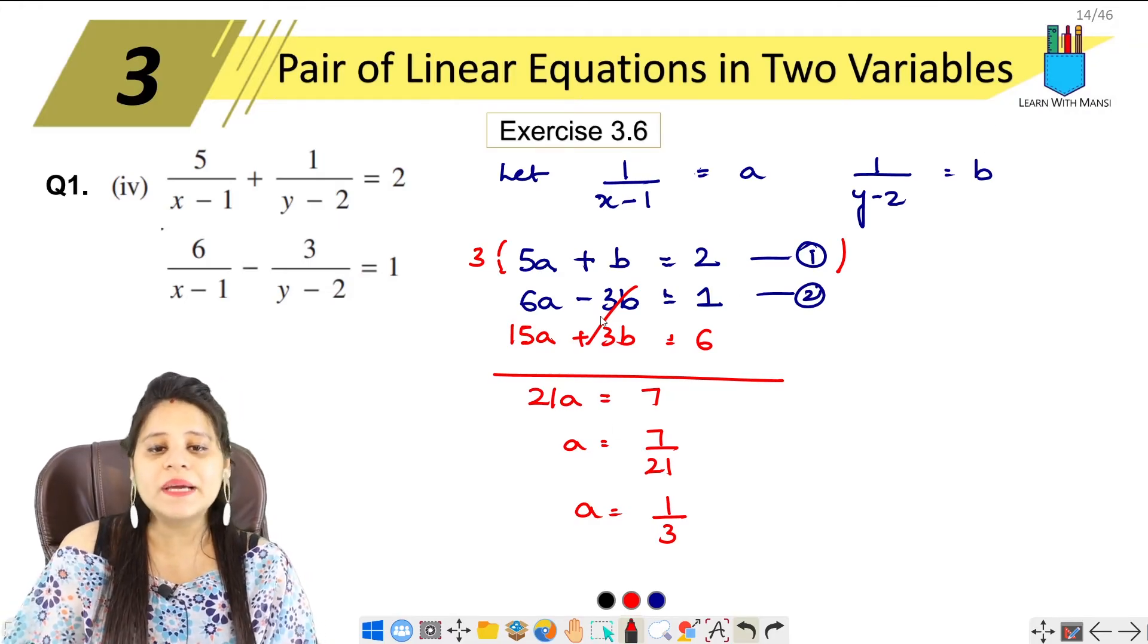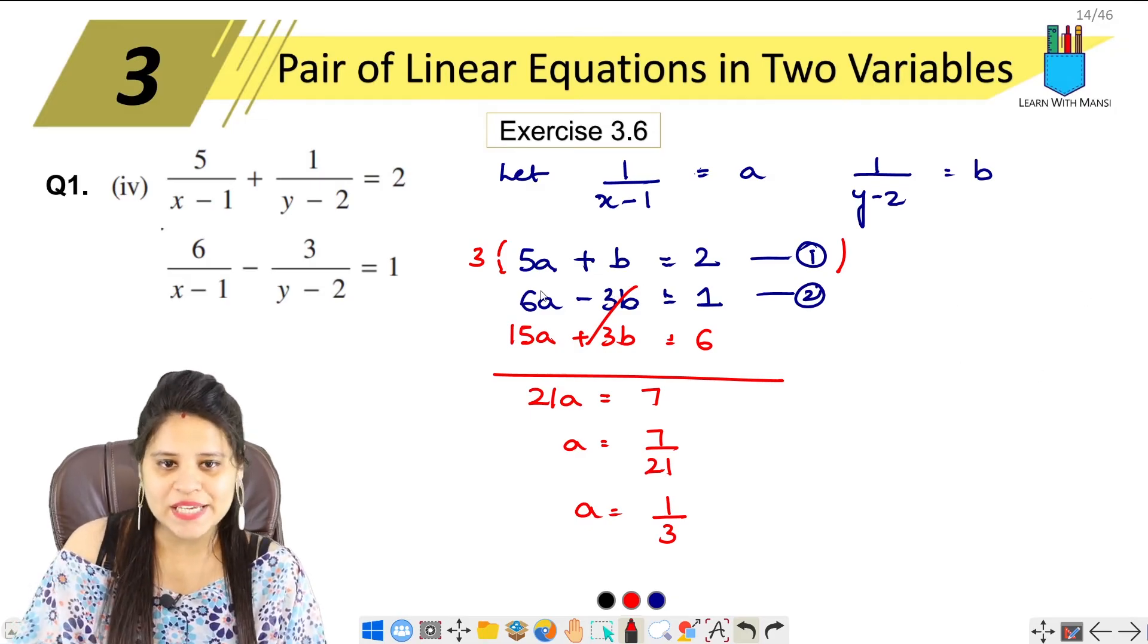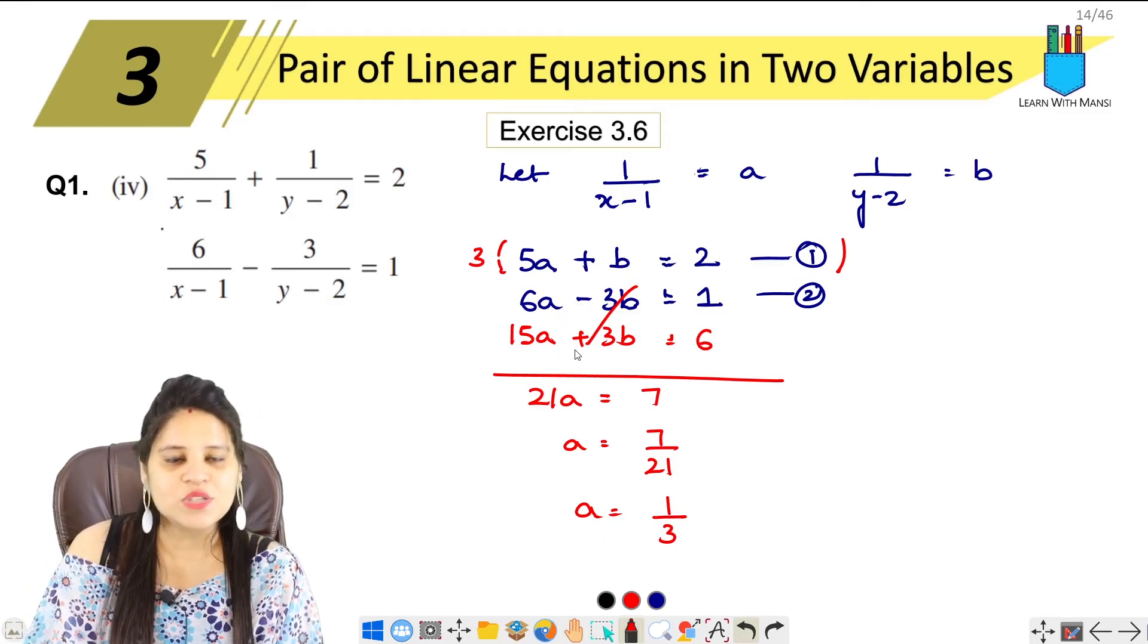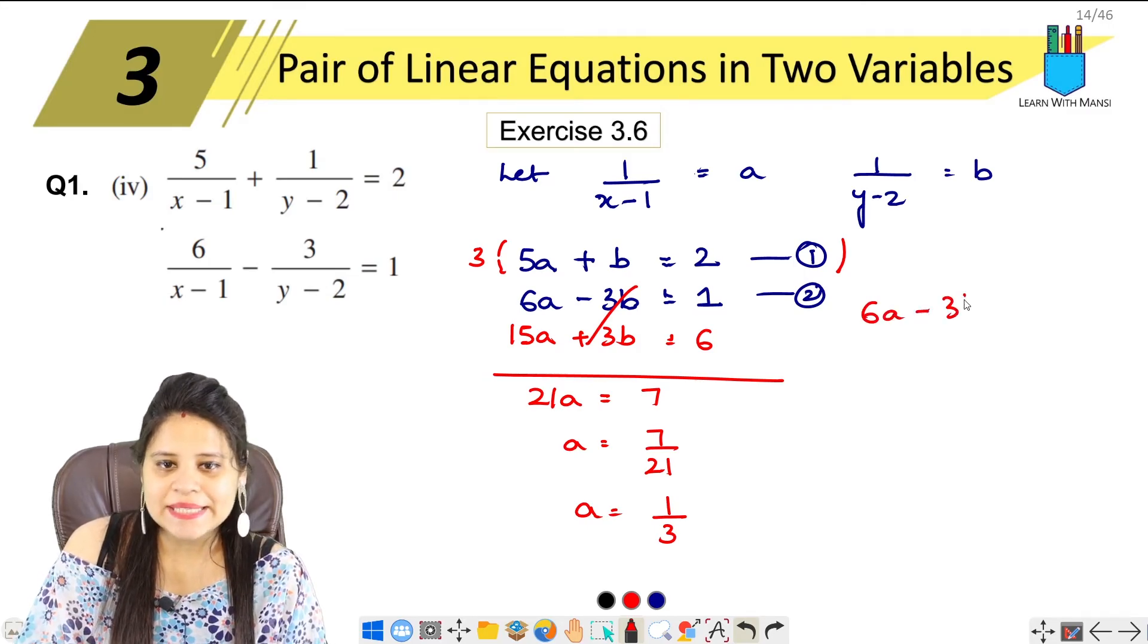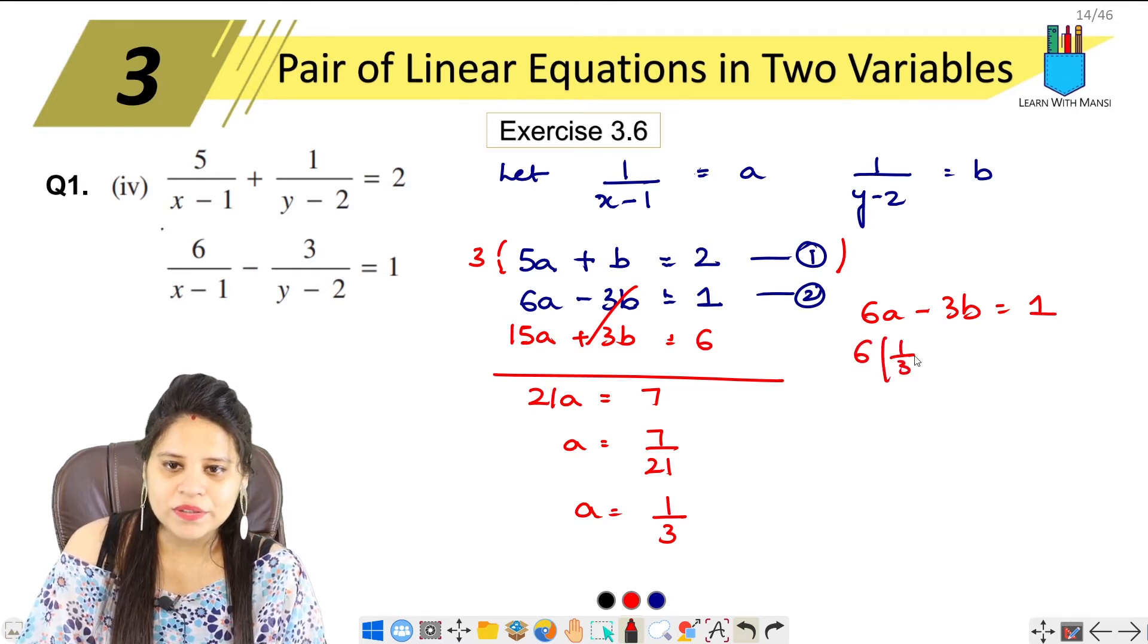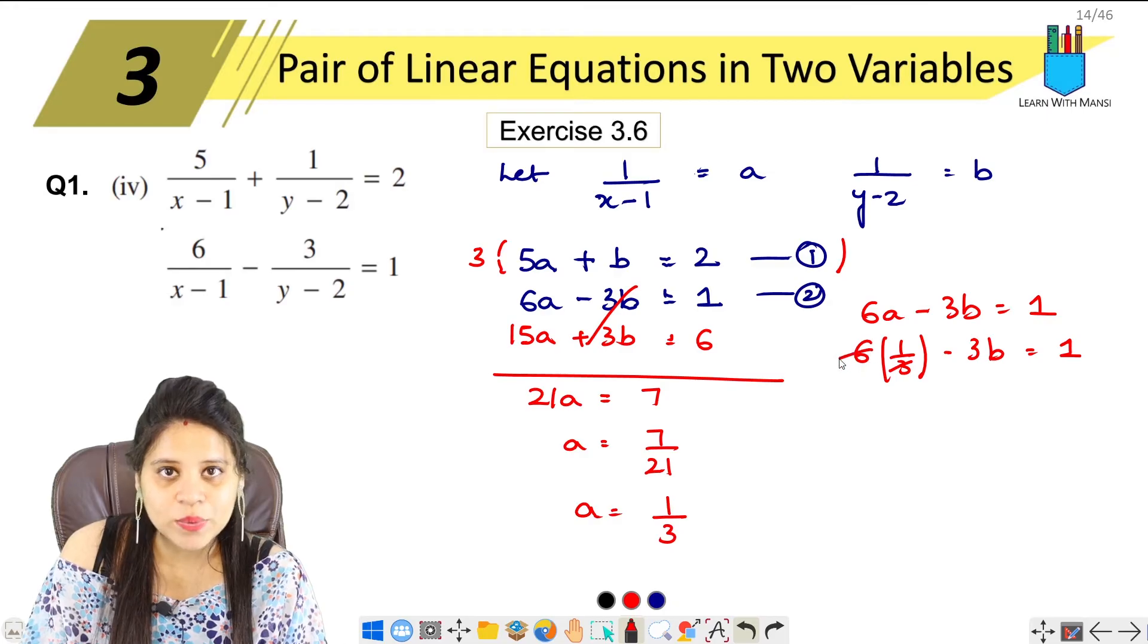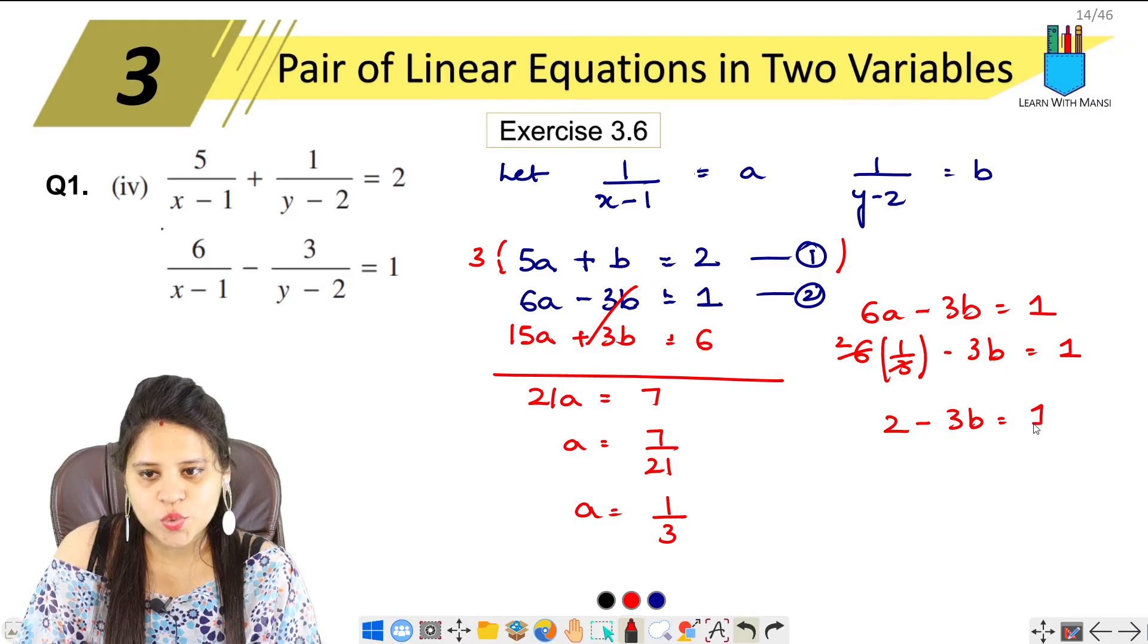Now if we put this 1 upon 3 in any equation, then we can find b. Let's put it in the second equation. 6a minus 3b equals to 1. So 6 times 1 upon 3 minus 3b equals to 1. This will cancel, 6 divided by 3 is 2. So 2 minus 3b equals to 1.